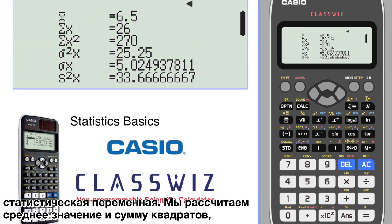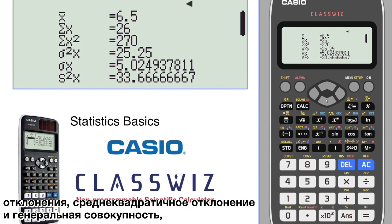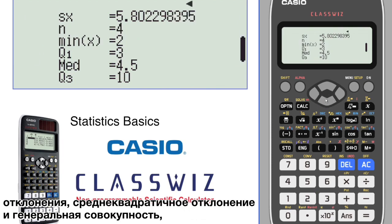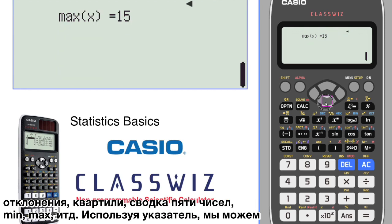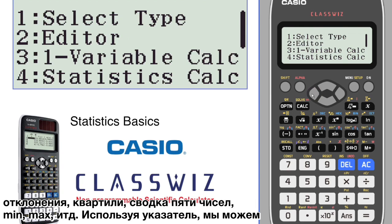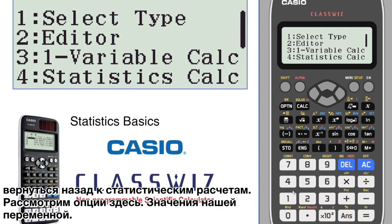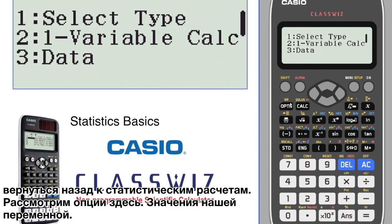Here's your mean, sum, sum of squares. We've got variances, standard deviations, and population standard deviations, quartiles, five number summary, min, max, etc. Using the back arrow, we can go back and go to stats calculations. Look at the options there.